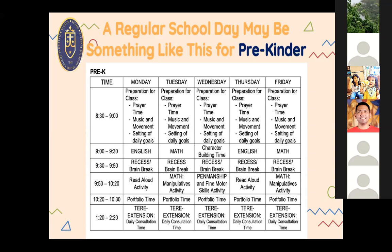Here you can see the sample schedule for pre-kinder. We have reduced the time to make it more realistic for families supporting their children in distance learning. Pupils will only spend a maximum of 20 to 30 minutes for synchronous sessions within the day together with a small group of students, allowing teachers to ensure that each child is given individual attention. Accommodations will be given should a pupil miss her scheduled synchronous session, and it will not be taken against her.